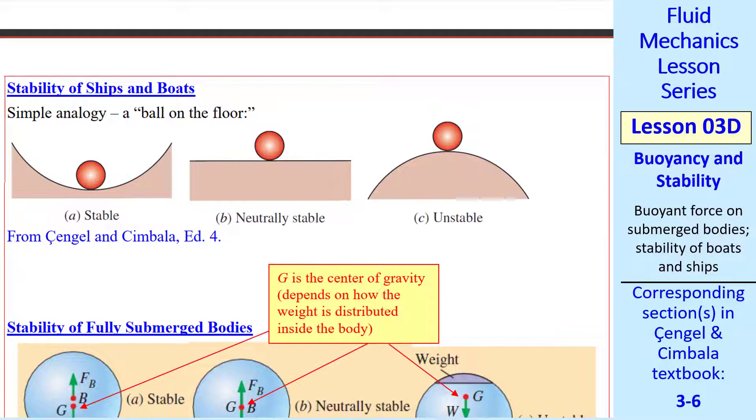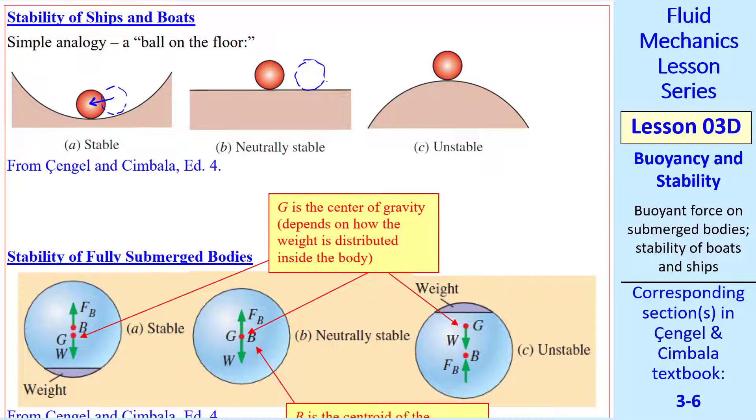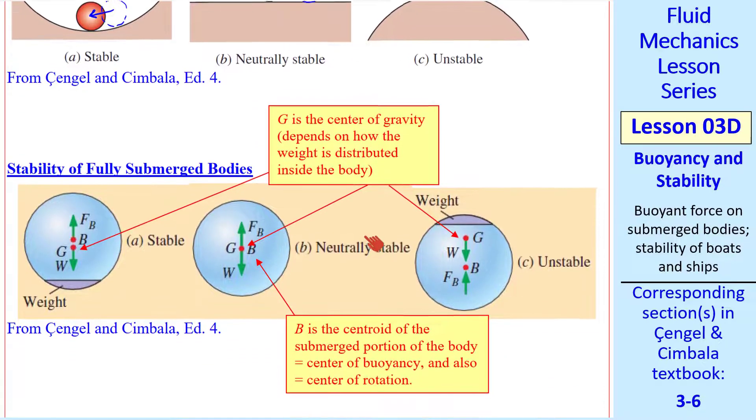Now I want to briefly discuss the stability of ships and boats. First of all, a review of what we mean by stability. I like this simple analogy that everyone can understand. The ball on the floor. If you have a floor shaped like this, this ball is stable. If we move it some distance, it will return to where it was. That's stable. The neutrally stable case is shown here. If we move the ball some distance, it just stays where we put it. The unstable case is shown here. If we move the ball even a little bit, it will keep moving and fall off. That's unstable. That helps us understand the stability of bodies.